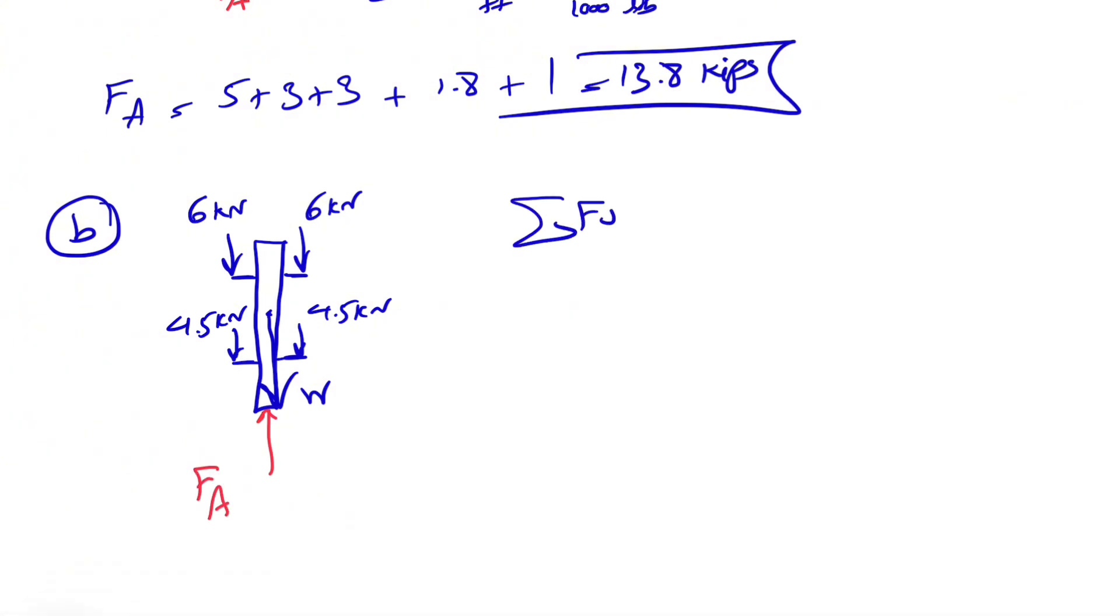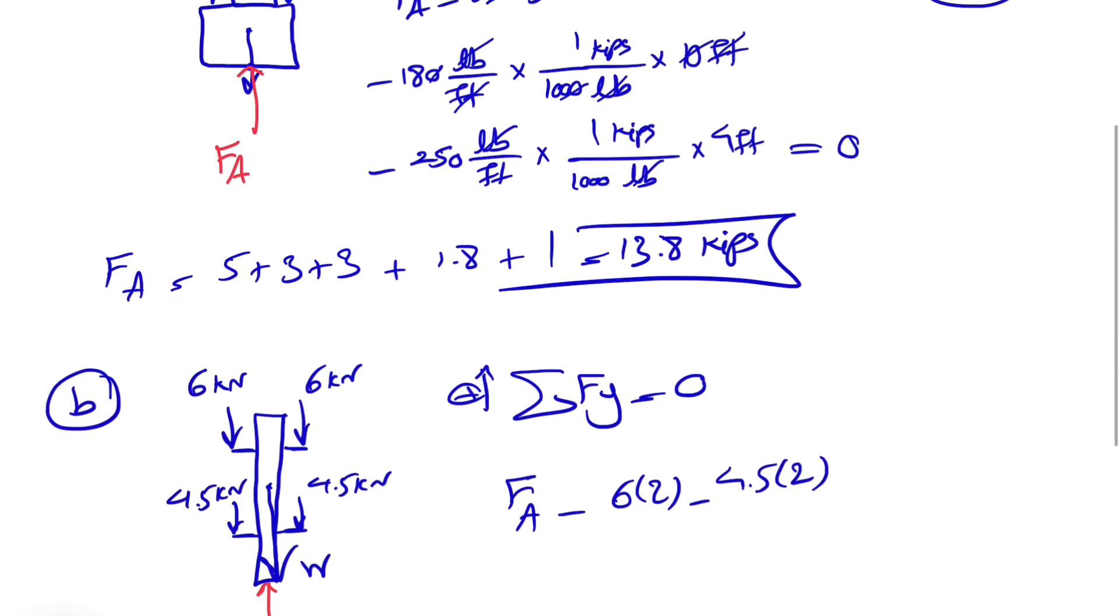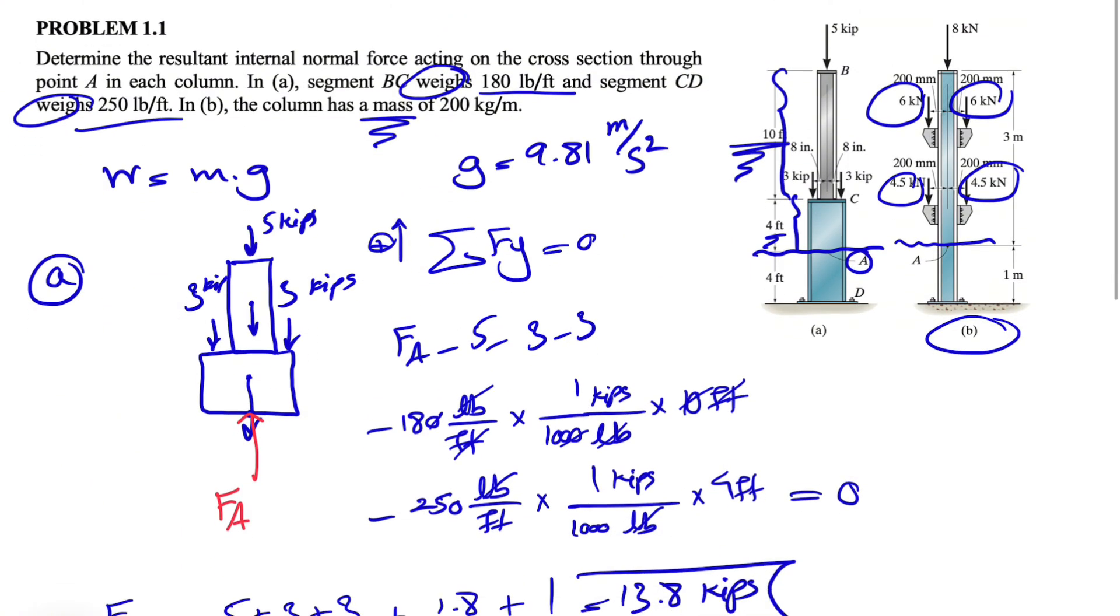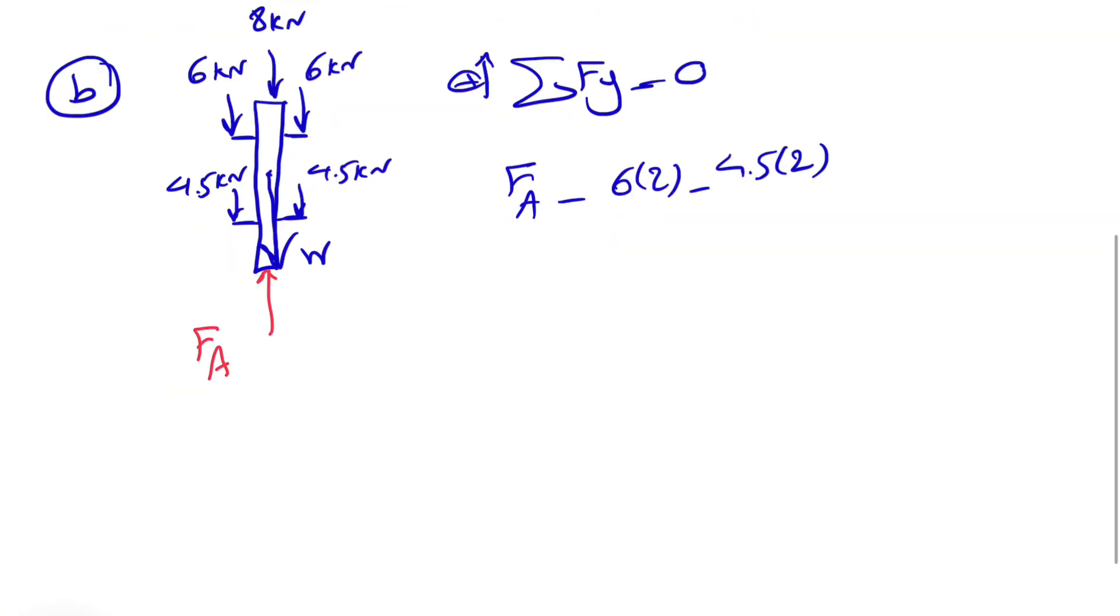So again, we go with sum of all forces in y direction equals zero, which will be FA minus six times two minus 4.5 times two. And we also have one force on top that I missed, so minus eight.